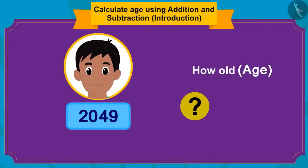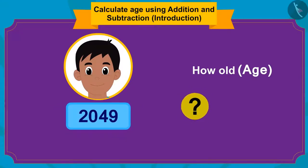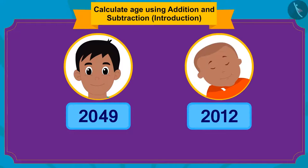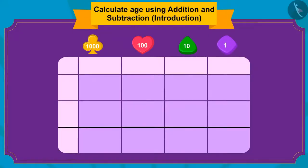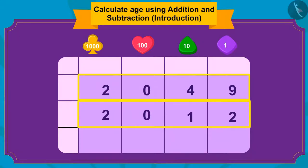It's very easy. Whenever we have to find the future age of a person — how much will it be in a certain year — we only have to subtract the year of his birth from the future year. The future year here is 2049, and Raju was born in 2012. So, we have to subtract 2012 from 2049.